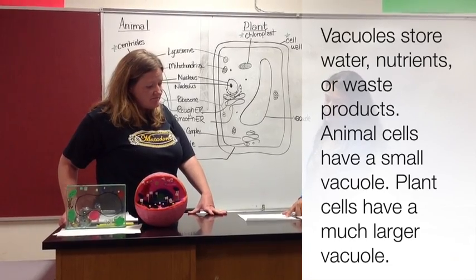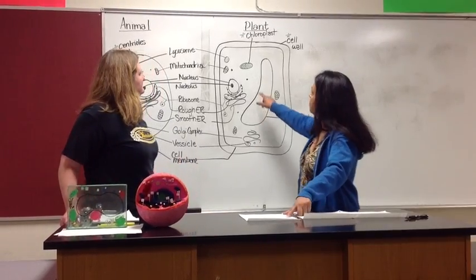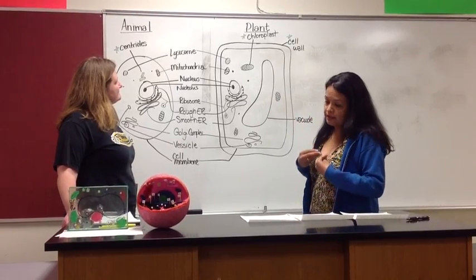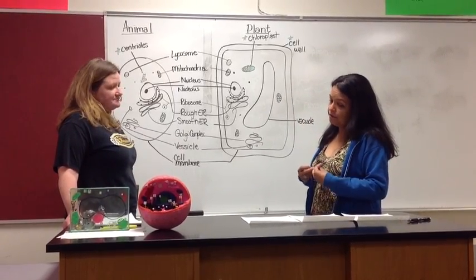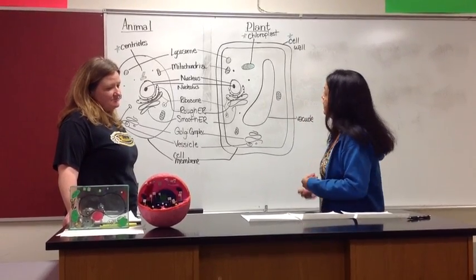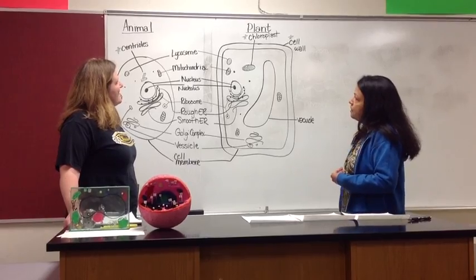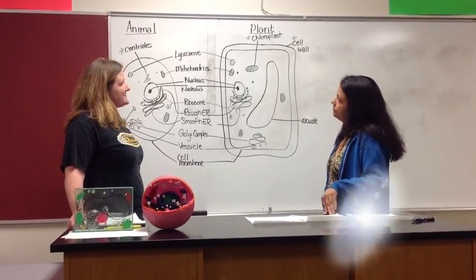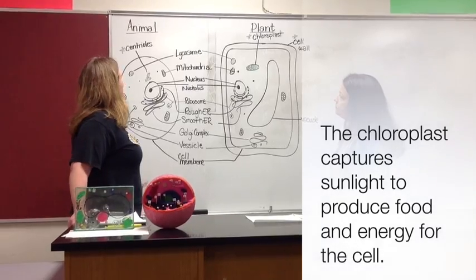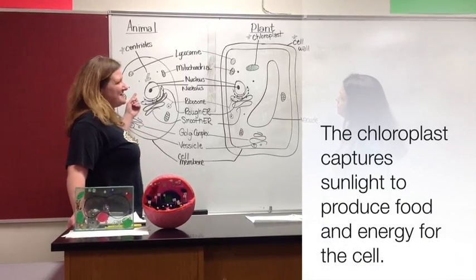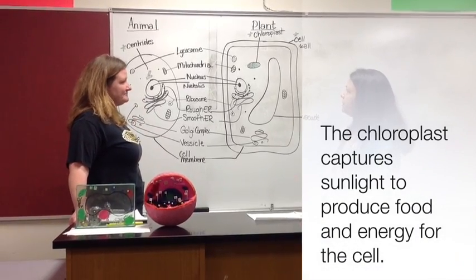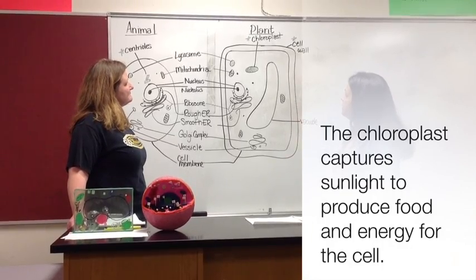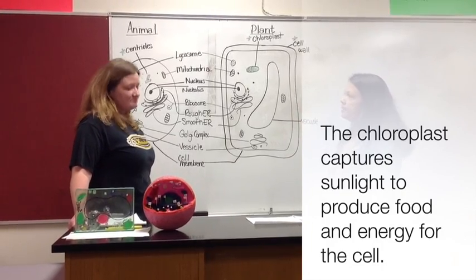The chloroplast is found in the plant cell. This organelle helps capture sunlight to produce food and energy for the cell — kind of like a solar power plant. Notably, it is not found in the animal cell; it is solely associated with plant cells.